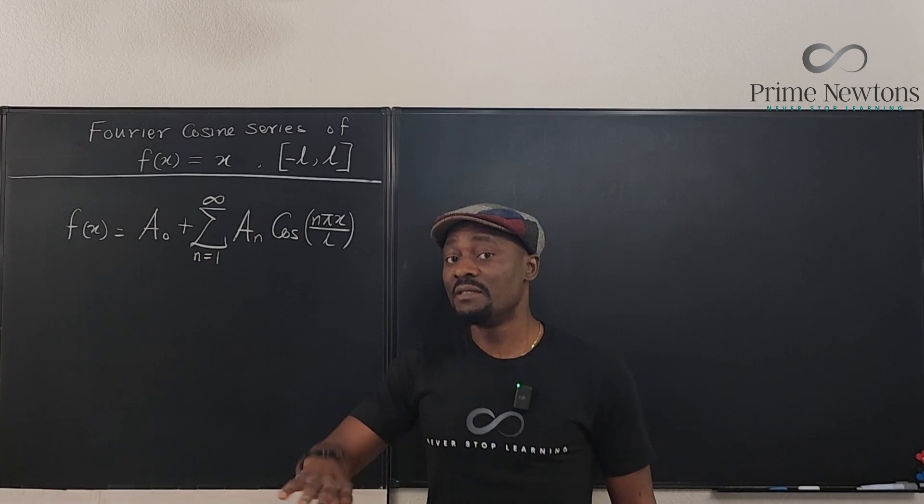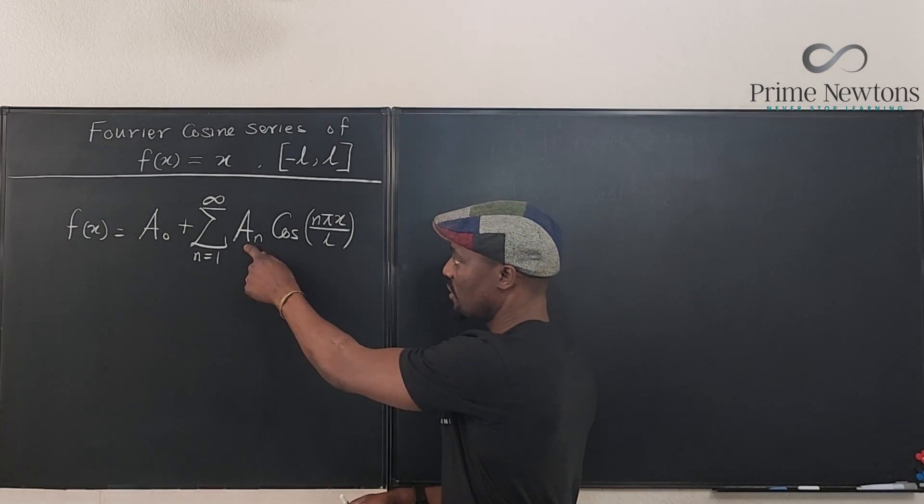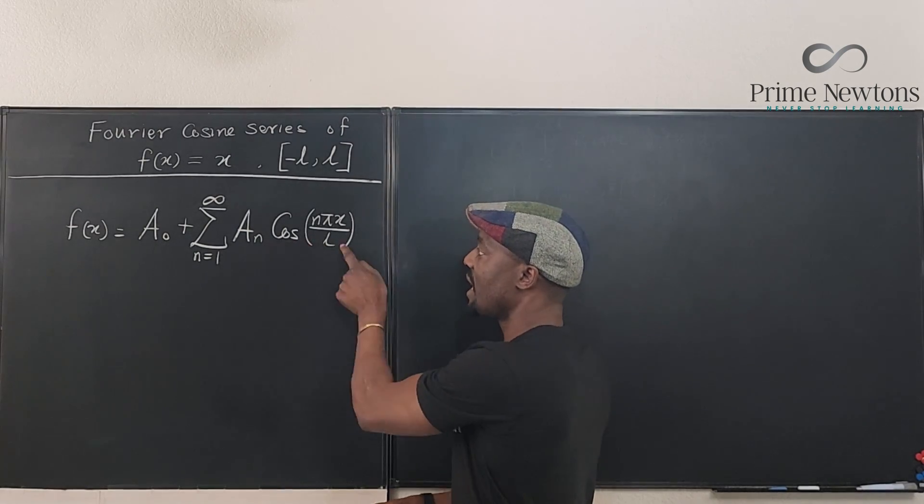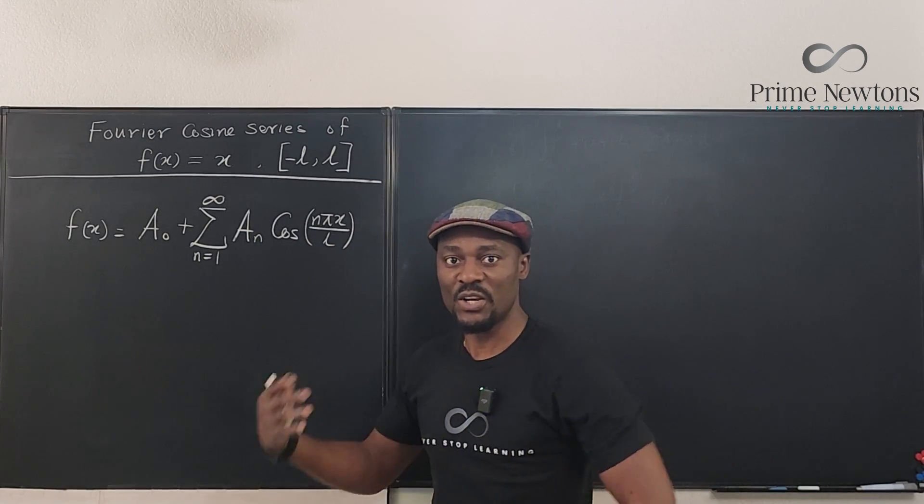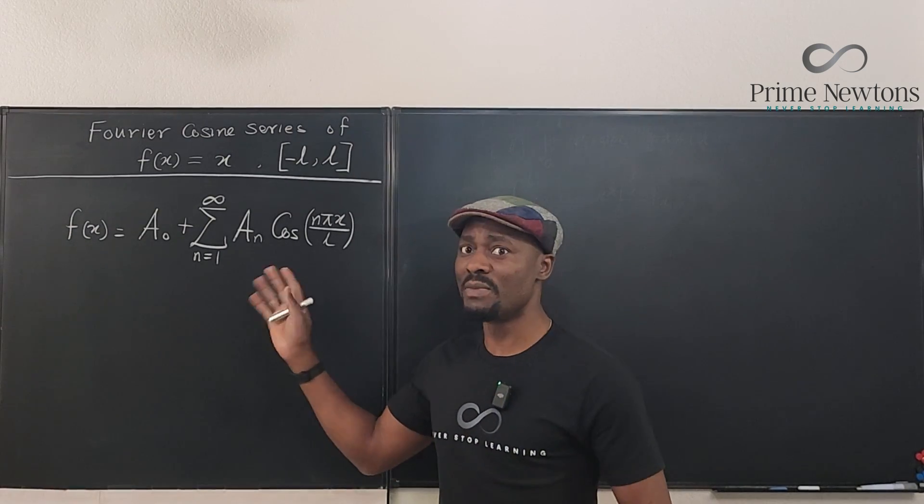If it involves sine also, if you're looking for the full series, you just need to, instead of saying just this, say plus b_n sine the same thing. You just need to include that and you find both of them. Now, what's the formula you need to have memorized? This is what you must know.